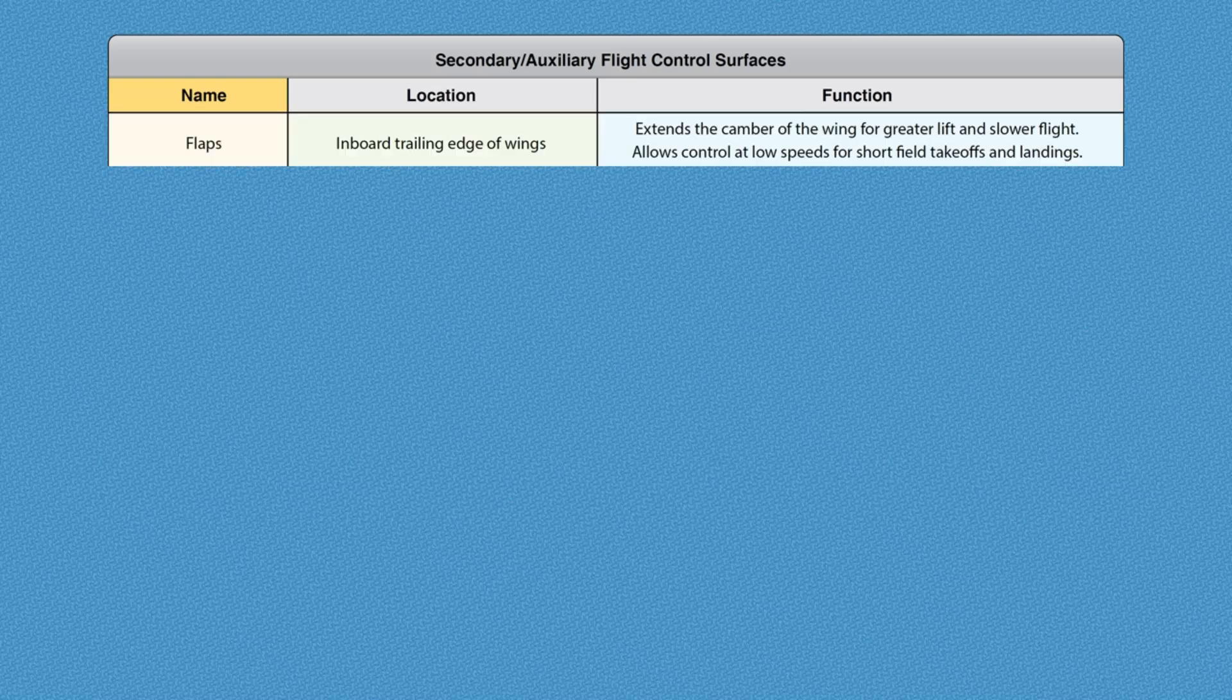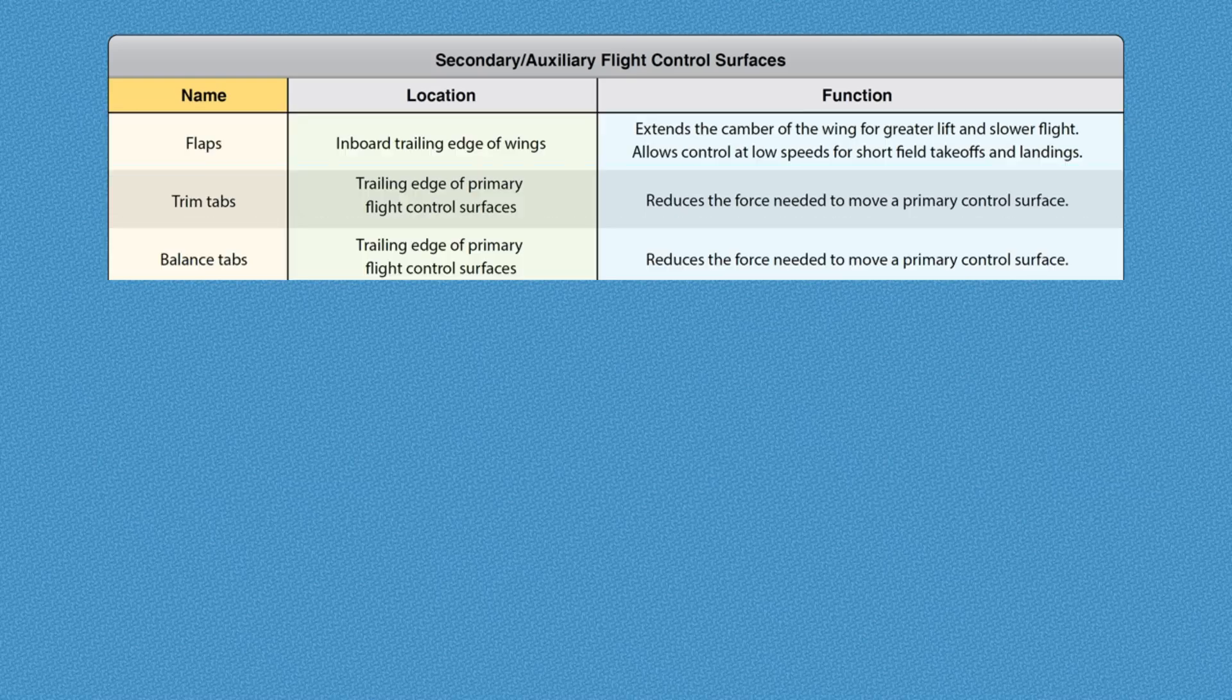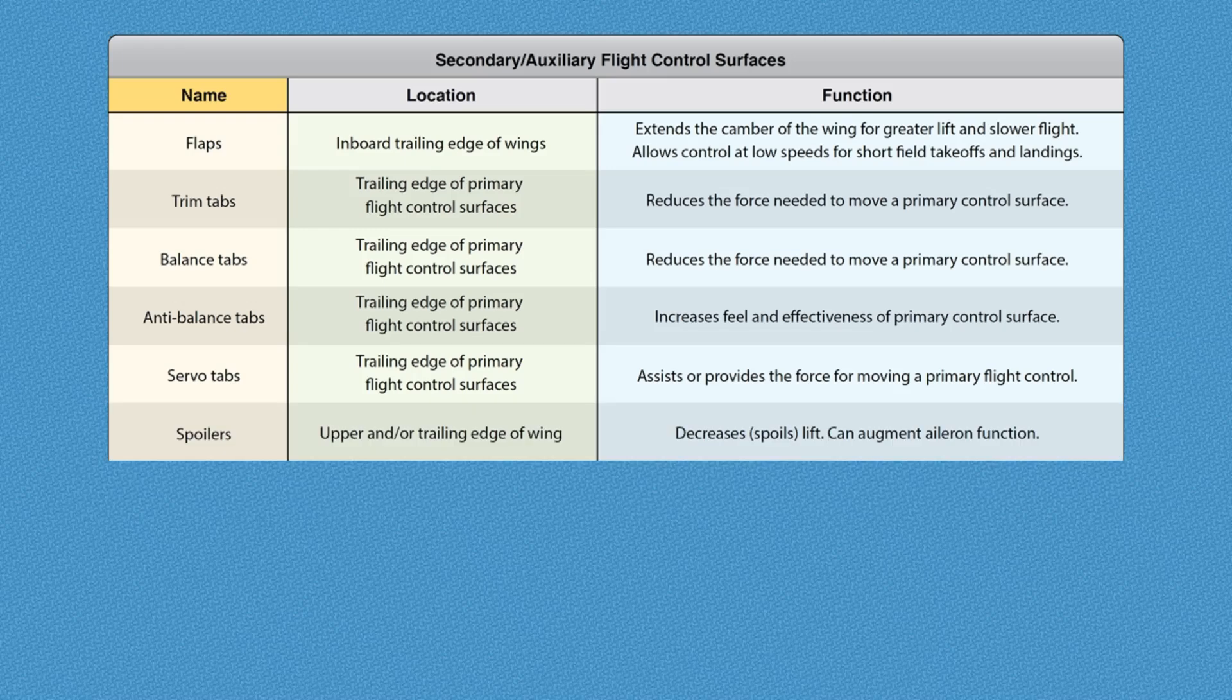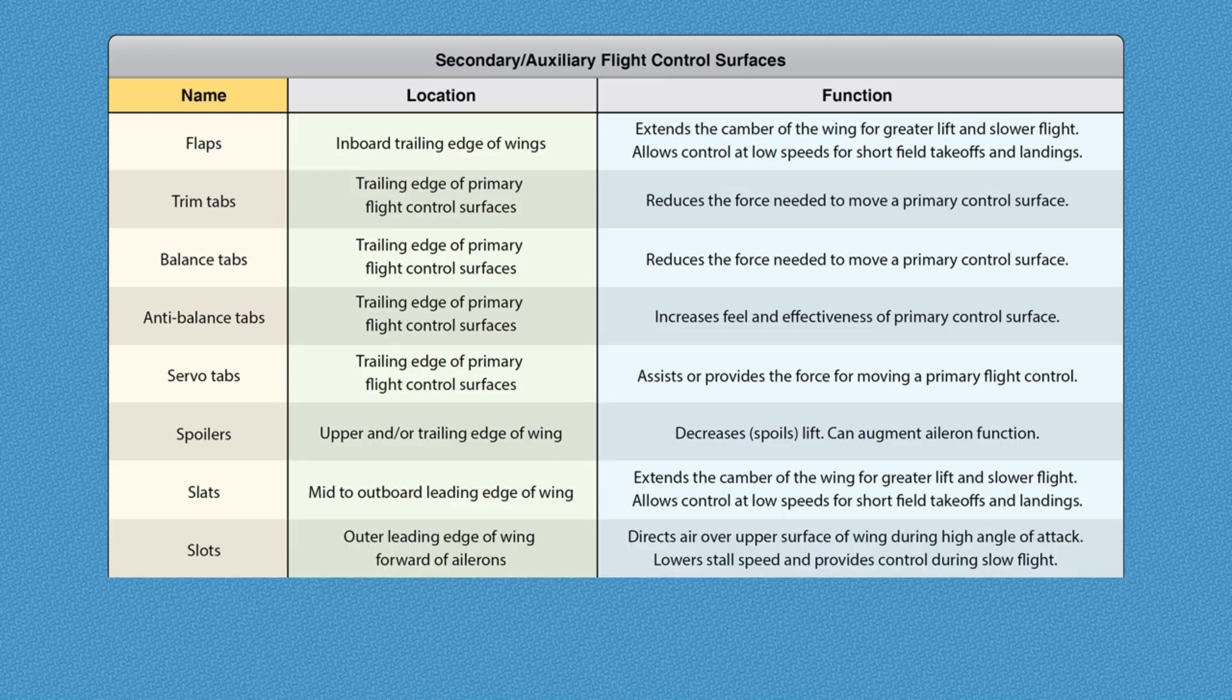There are several secondary, or auxiliary, flight control surfaces. Here's a breakdown of their names, locations, and functions as seen on most large aircraft.